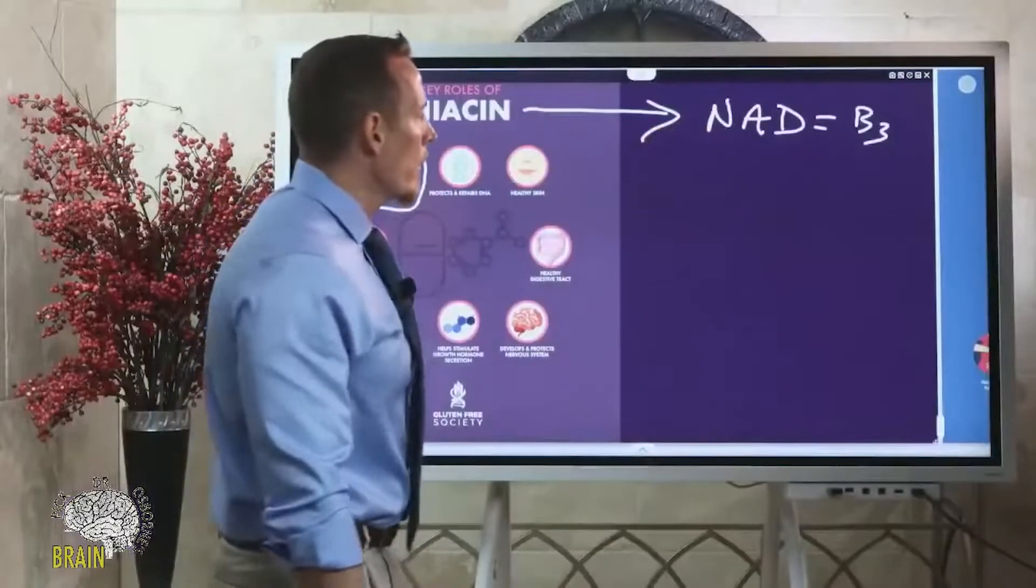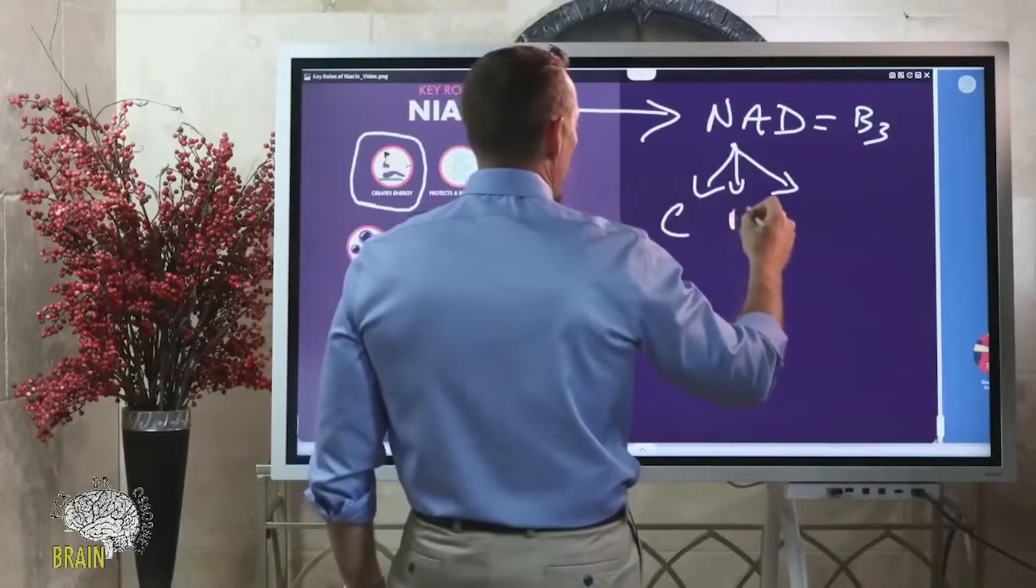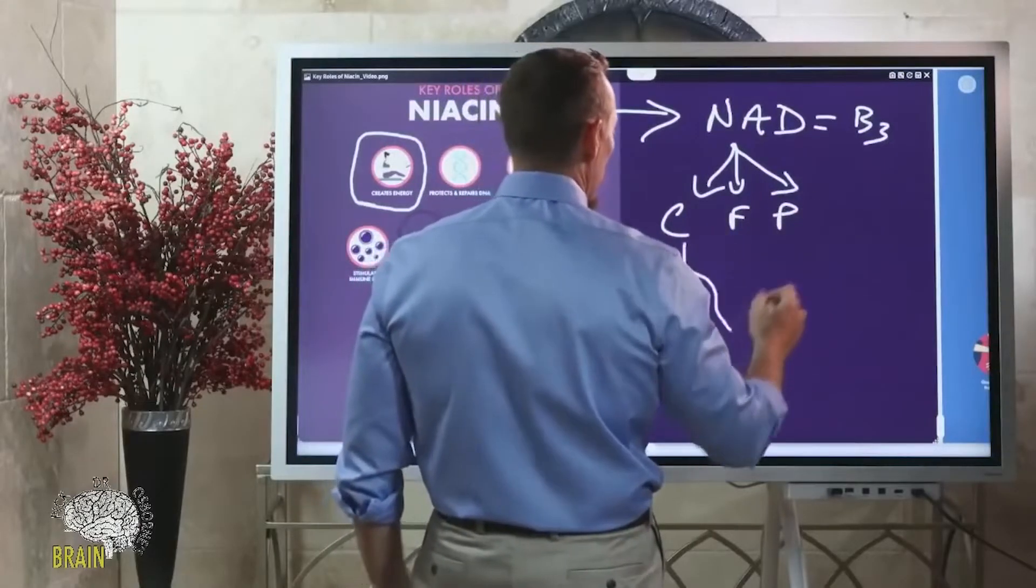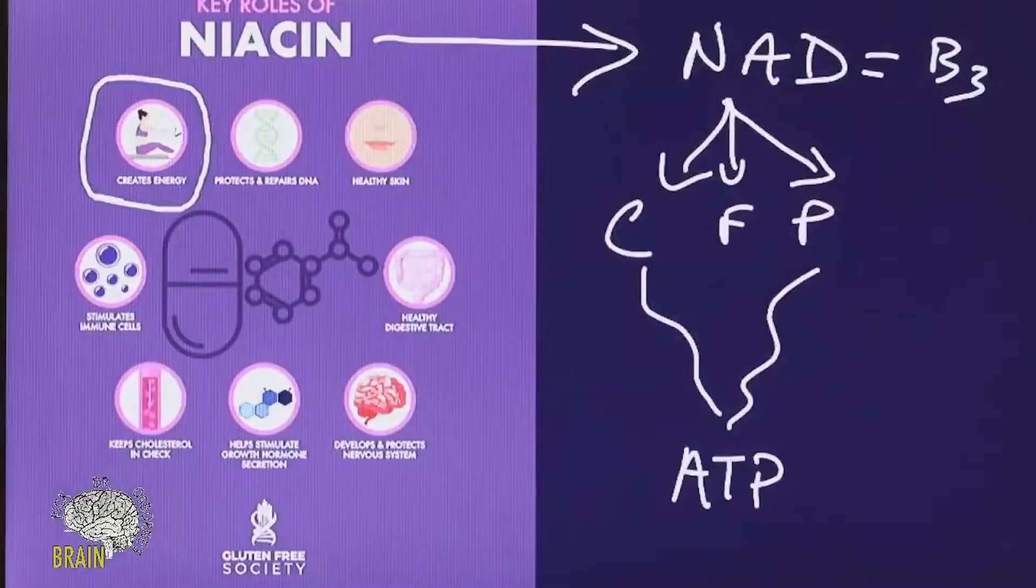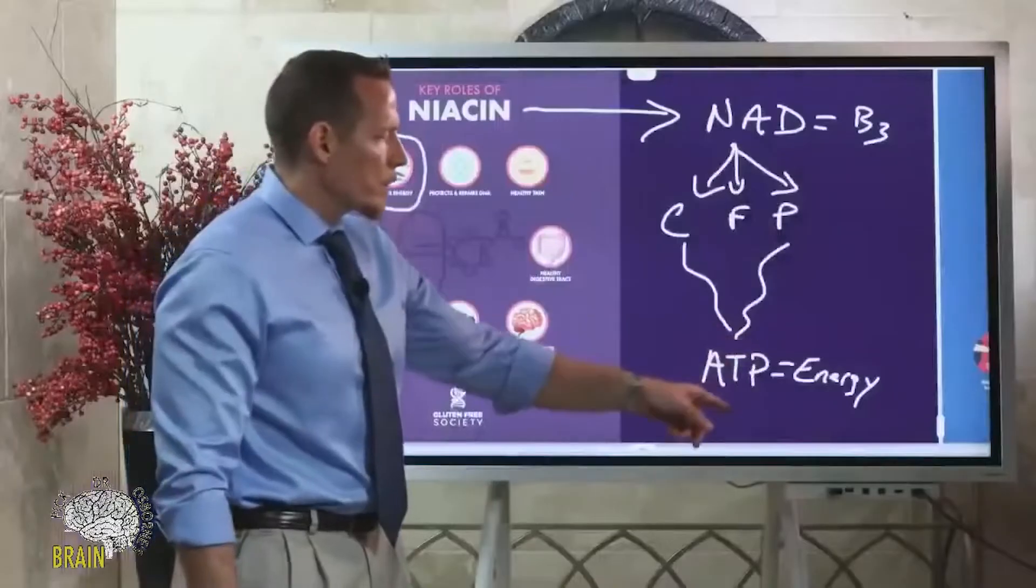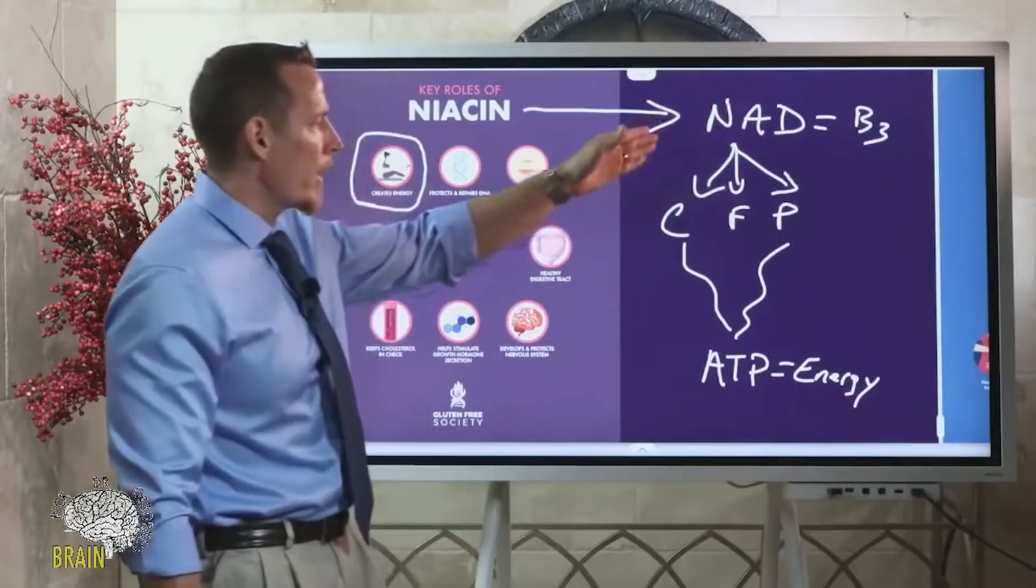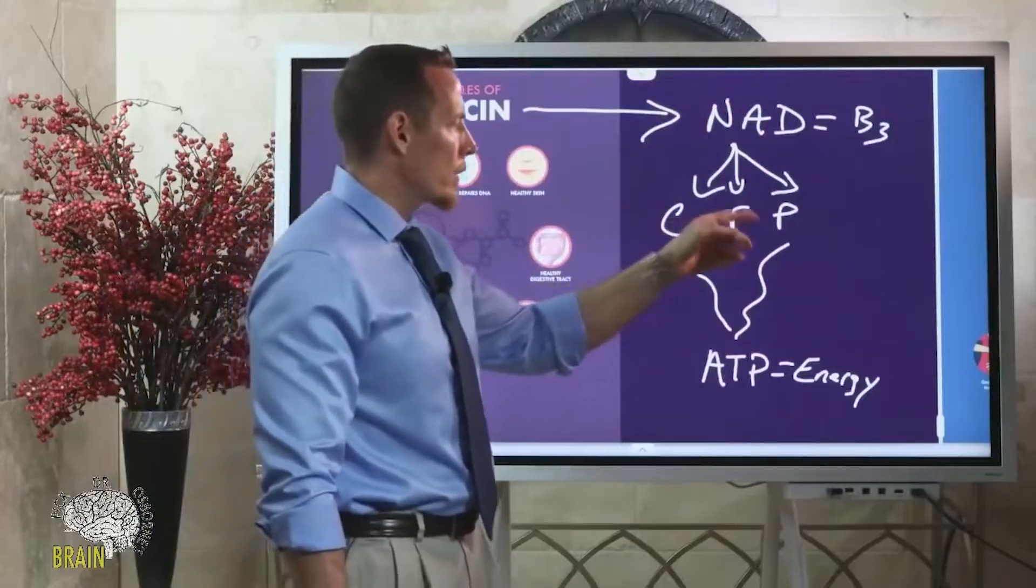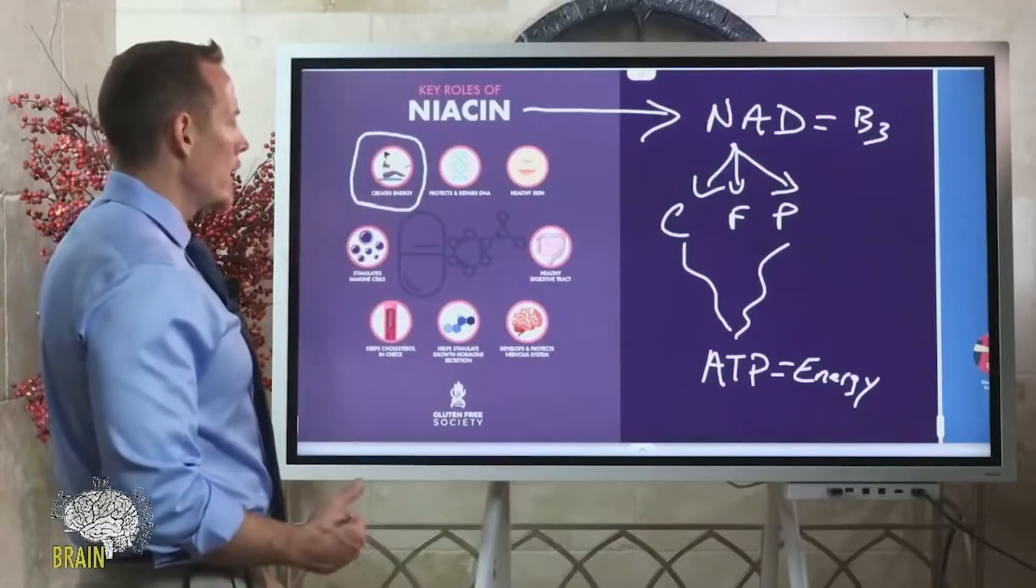This NAD helps you break down carbs, fats, and protein, and then convert those into ATP. ATP is what your body uses as energy. But it's very difficult to get to that energy if you don't have NAD or niacin because it's very hard for your body to molecularly break down carbs, fats, and proteins. You have to have niacin to do that. It creates energy.